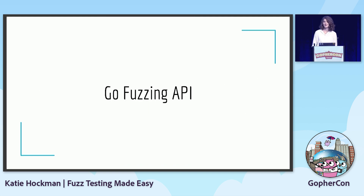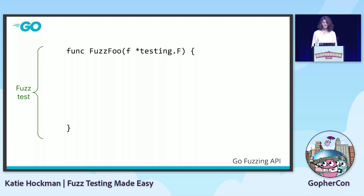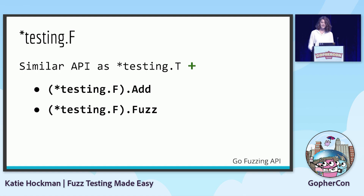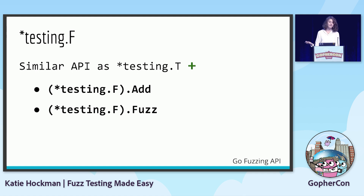Let's jump into a bit of code to learn how you can write one yourself. The first thing we're going to do is define our fuzz test. This is the overarching function of the test, much like a unit test or a benchmark, and these can live right next to those tests in that underscore test.go file. In much the same way that a unit test accepts a testing.T and a benchmark accepts a testing.B, a fuzz test accepts a testing.F. This testing.F is new for Go 1.18, and it provides the functions you need for your fuzz test. Those are f.add and f.fuzz. f.add is what you'll use to provide those starting inputs, and the function provided to f.fuzz is what's actually going to be run when fuzzing is executed.